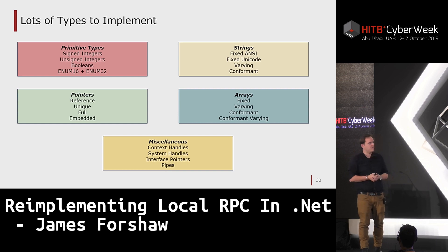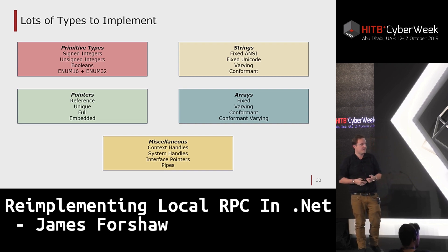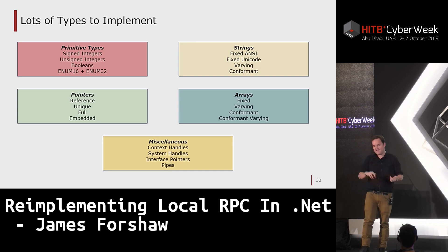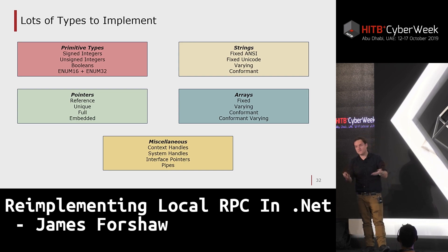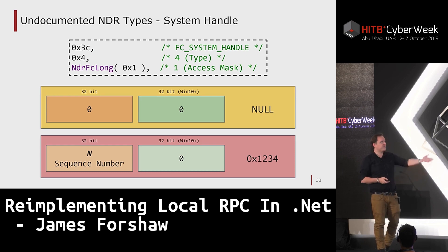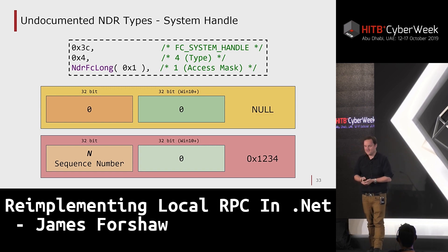What will strike you immediately is there are a huge number of types to implement: all the primitive types, different string types — ANSI and Unicode — varying and conformant arrays, pointers, miscellaneous stuff, and system handles with their own marshalling format. System handles are undocumented in the NDR bytecode, undocumented in the IDL format, and undocumented in the marshalling format — so you need to reverse engineer that. It's also incompatible between Windows 8 and Windows 10, which makes it even more special.